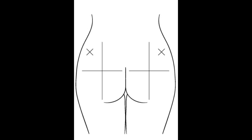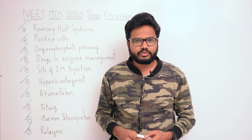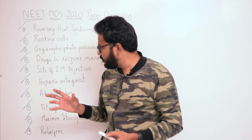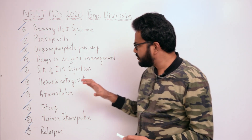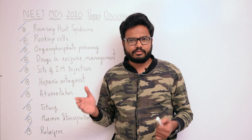To find the correct location for injecting into the gluteus maximus, expose the buttocks and divide each buttock into four parts in your mind. The injection goes into the upper outer quarter of the buttock — marked with an X in this diagram — towards the hip bone portion.